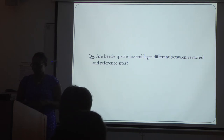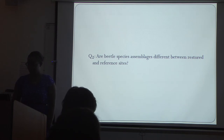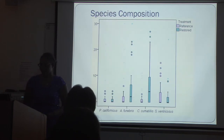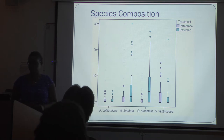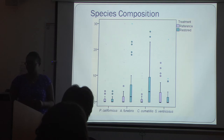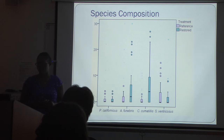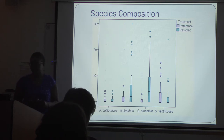Now for my second research question: are beetle assemblages different between restored and reference sites? For this, I used a box plot to compare the means of beetle species — the total means by species. This graphic shows what species were collected across all the dates and the total ground beetle abundance for the entire season.